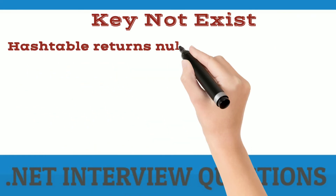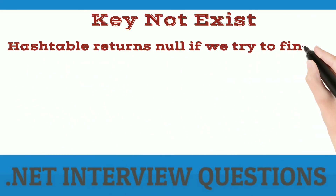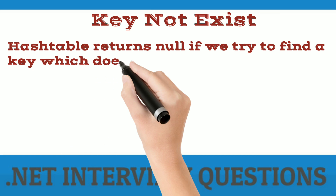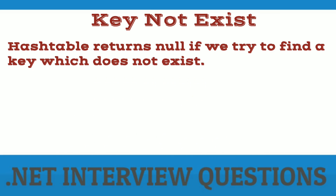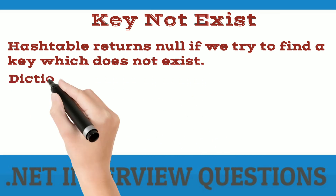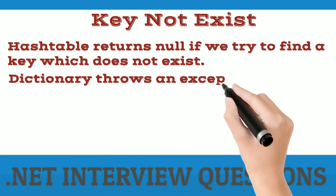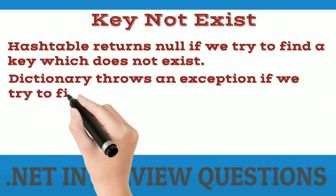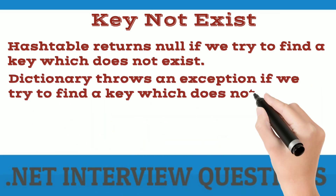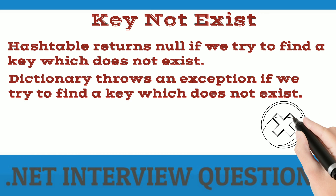Hash table returns null if we try to find a key which does not exist in the hash table. But dictionary throws an exception if we try to find a key which does not exist in the dictionary.